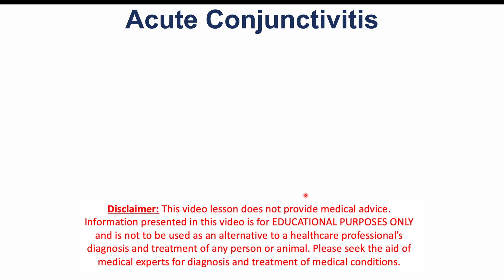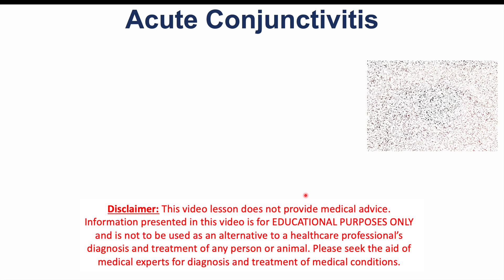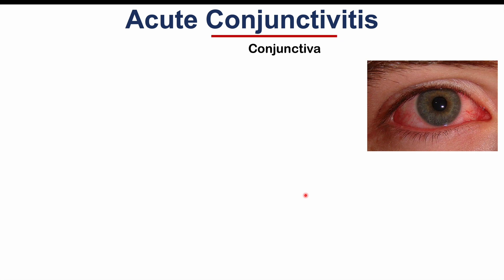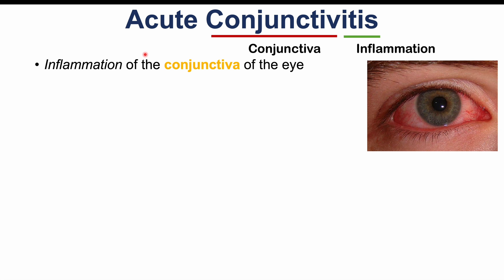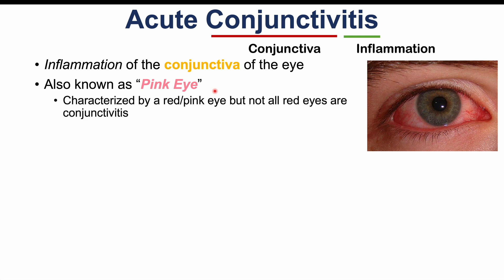This lesson is on acute conjunctivitis. If we break down the word, the prefix 'conjunctive' refers to the conjunctiva of the eyes and the suffix 'itis' refers to inflammation. So acute conjunctivitis is an inflammation of the conjunctiva of the eye. It is also known as pink eye because this condition is characterized by a red or pink eye.